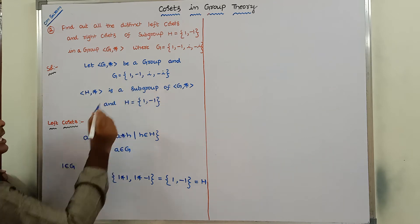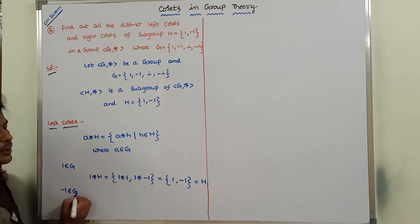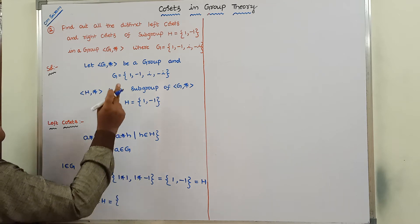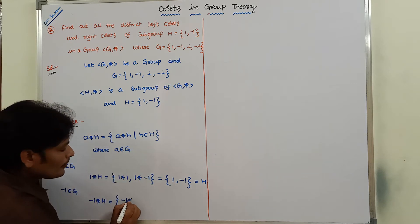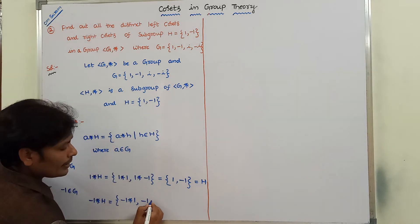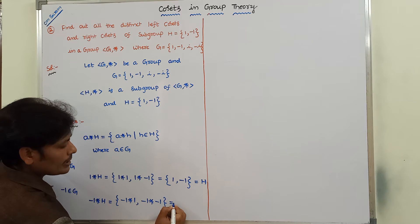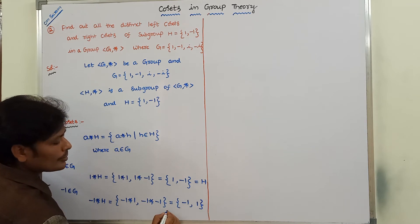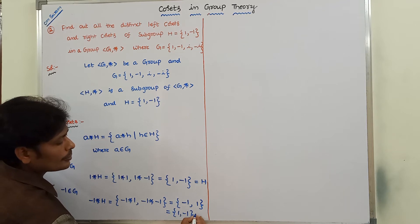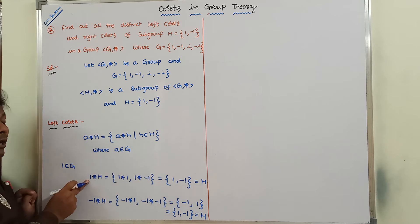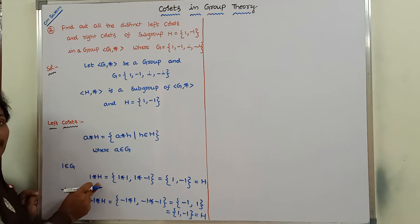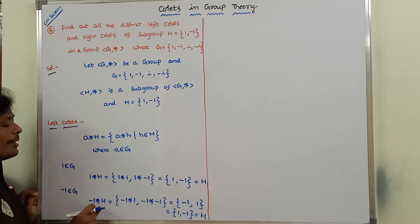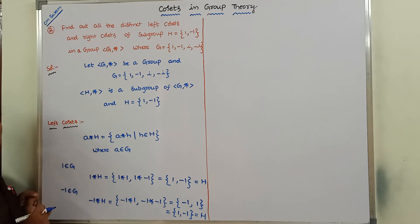Next, I am taking another element in G, that is -1. So, (-1)*H: here -1 is multiplied with 1, and -1 is multiplied with -1. So, (-1)*1 = -1, and (-1)*(-1) = 1. That is equal to {-1, 1} = H. Here, -1 is on the left-hand side of subgroup H, so it forms a left co-set.